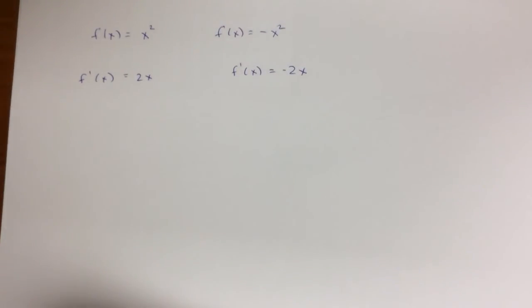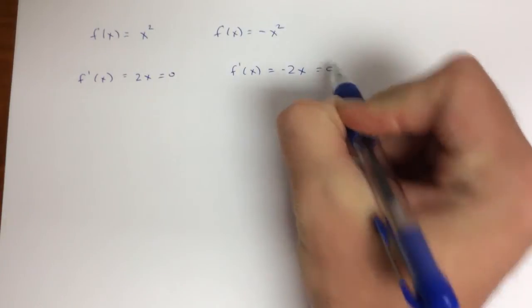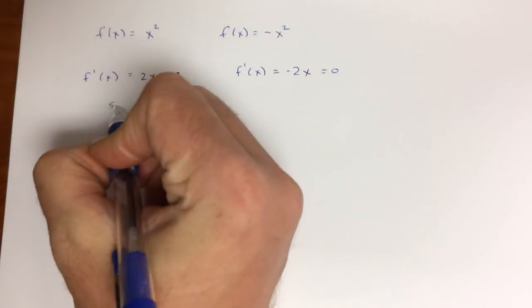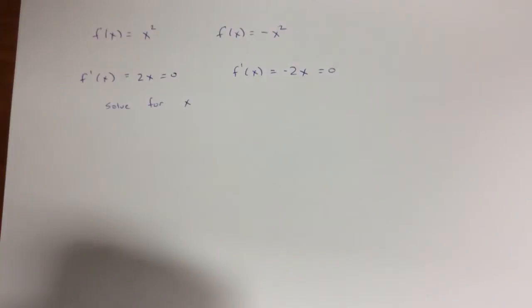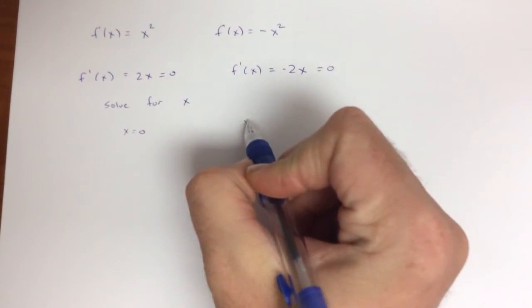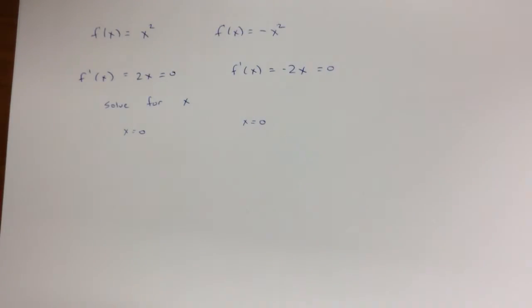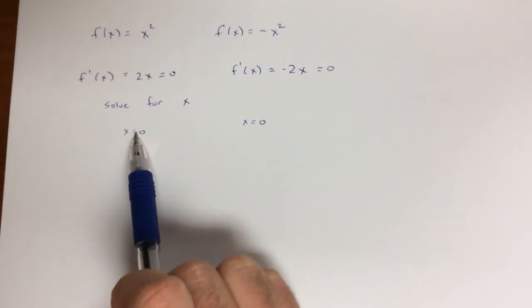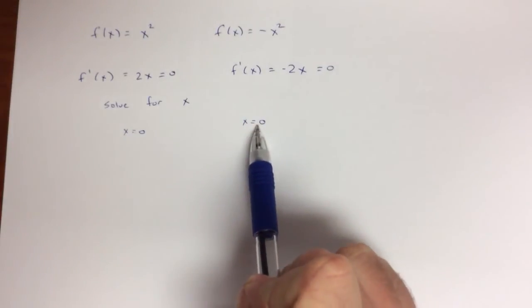Well, to find the x value that maximizes this function, I set the first derivative equal to zero. And then solve for x. For this function, I get x is zero. For this function, I also get x is zero. It's the exact same answer. But that doesn't mean that this is going to be a maximum or a min. All it tells me is that x is zero is where an extrema occurs, either a max or a min.